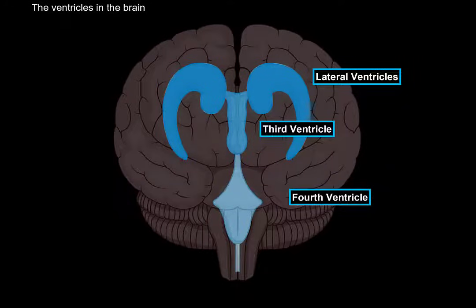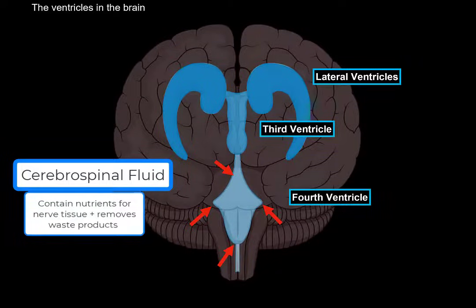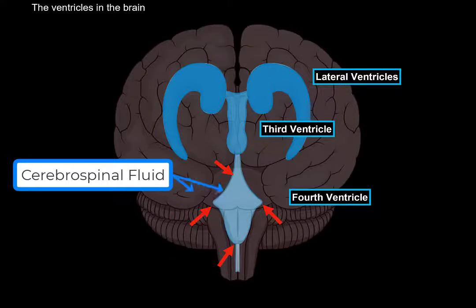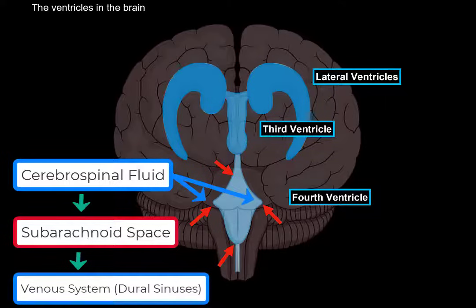The fourth ventricle has the aqueduct up, the central canal down, and two apertures on the lateral sides that go into the subarachnoid space. These ventricles are spaces within the central nervous system that contain cerebrospinal fluid, which delivers nutrients to nerve tissue and removes waste products. The cerebrospinal fluid flows through the apertures on the fourth ventricle into the subarachnoid space, and is then filtrated into the venous system through the dural sinuses.